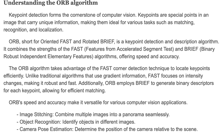The ORB algorithm takes advantage of the FAST corner detection technique to locate keypoints efficiently. Unlike traditional algorithms that use gradient information, FAST focuses on intensity changes, making it robust and fast. Additionally, ORB employs BRIEF to generate binary descriptors for each keypoint, allowing for efficient matching. ORB's speed and accuracy make it versatile for various computer vision applications such as image stitching, object recognition, and camera pose estimation.